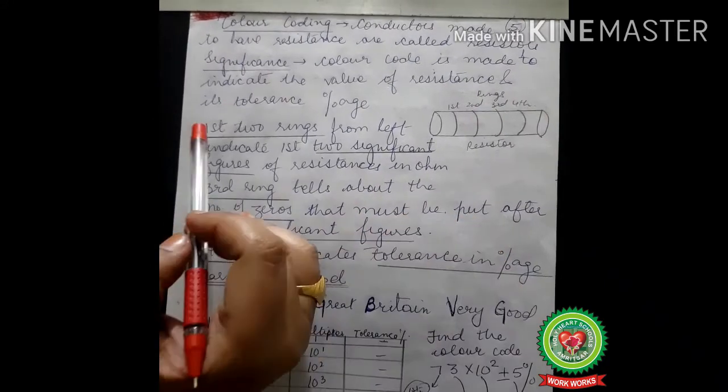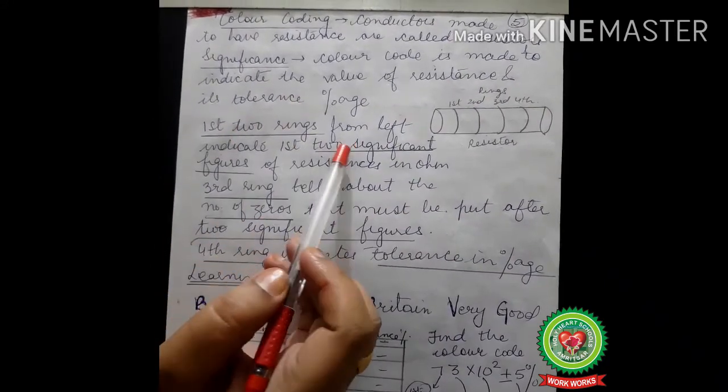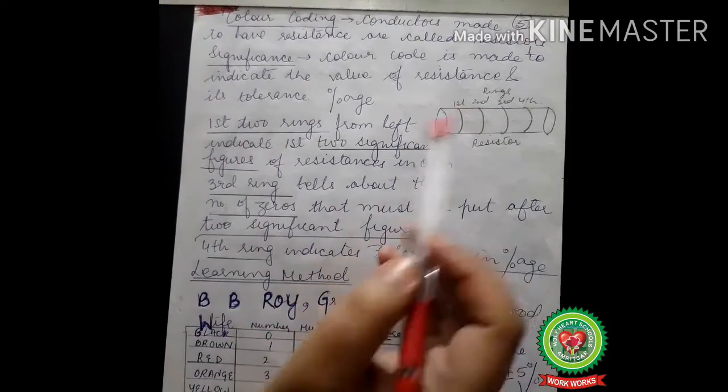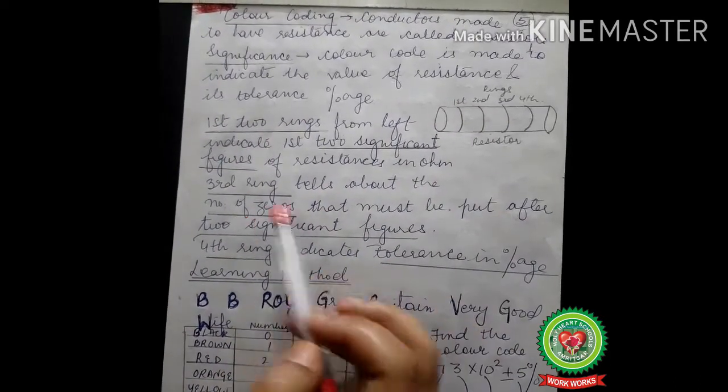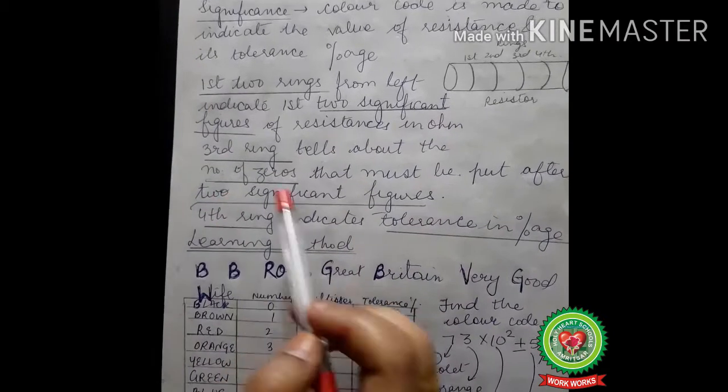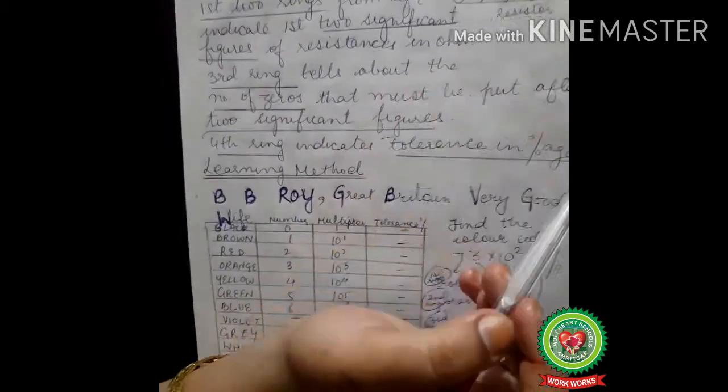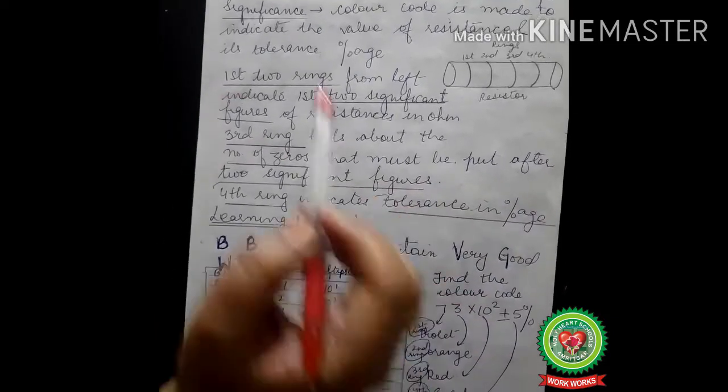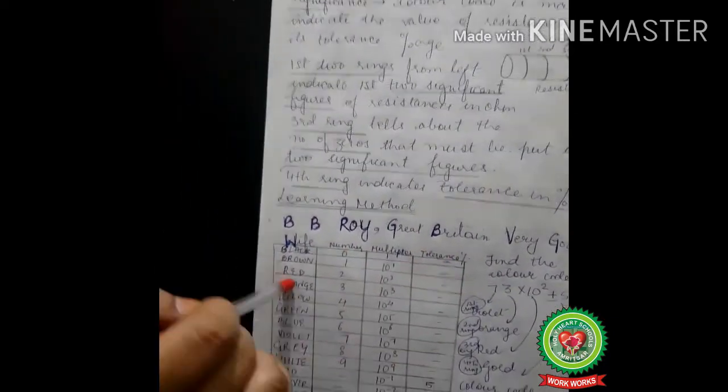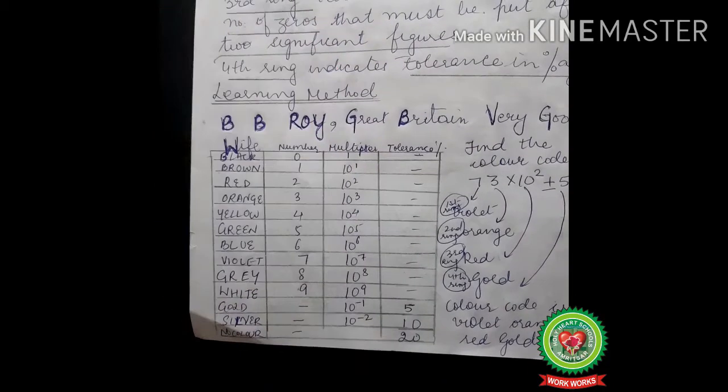Here, the first two rings are giving us two significant figures, and the third ring is giving us the number of zeros. Then the fourth ring is indicating the tolerance in percentage. Again, the temperature increased or decreased. But before doing all these things, we should know how to make the table.